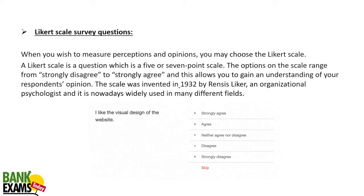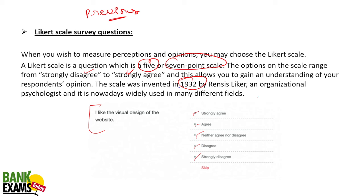The Likert scale — it was invented in 1932 by Rensis Likert. This question was asked in previous papers. When you wish to measure the perception and opinion of respondents, you may choose the Likert scale. It is a 5 or 7-point scale where the options range from strongly agree to strongly disagree, to understand the opinion of respondents. For example: 'I like the visual design of the website' — strongly agree, agree, neither agree nor disagree, disagree, strongly disagree. That is the Likert scale.